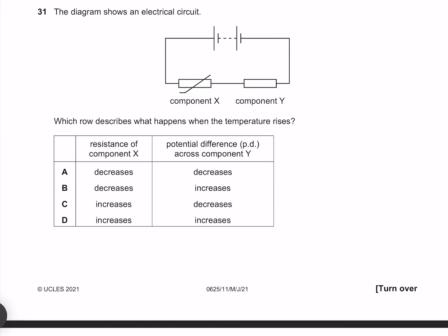The diagram shows an electric circuit. Which row describes what happens when the temperature rises? Component X is a thermistor, which unless otherwise indicated, when the temperature rises, its resistance is going to decrease. If our resistance of our component X decreases, then so too must its voltage drop. The relationship between our source voltage Vx and Vy is that our source voltage is equal to Vx plus Vy, such that if this one drops, then this one must increase to keep our source the same. Therefore the potential difference across component Y must increase and our answer is B.